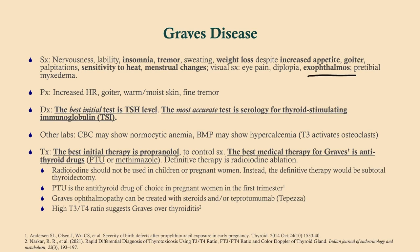The symptoms are going to be consistent with hyperthyroidism. You can also get exophthalmos — that is not due to hyperthyroidism itself. That's fairly unique to Graves' disease and is due to a deposition of glycosaminoglycans in the retroorbital tissue. Physical exam will be consistent with hyperthyroidism. The best initial test is a TSH level, like any thyroid etiology you're thinking about. The most accurate test is serology for those TSIs — get a thyroid-stimulating immunoglobulin. Other labs: a CBC may show normocytic anemia just due to the inflammation; the BMP may show hypercalcemia because T3 activates osteoclasts.